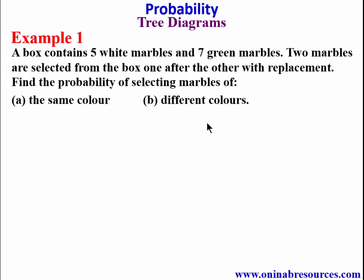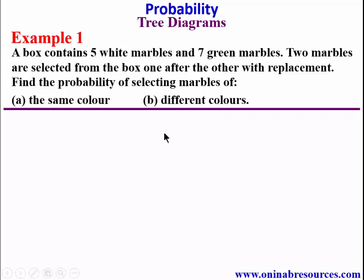If you have not watched that, check the description section of this video on our YouTube channel to get links to other videos on probability. In this problem, we are going to use the tree diagram, thereby showing all the possible outcomes of this problem. We have the diagram; we start with the first choice. For the first choice, we have white and green — this is how a tree diagram looks.